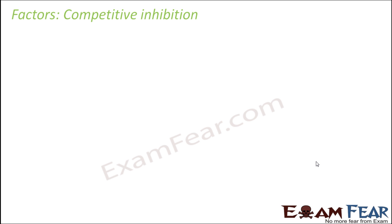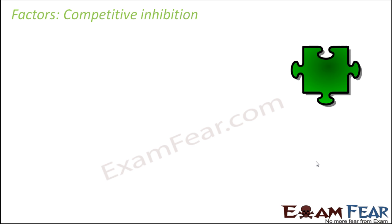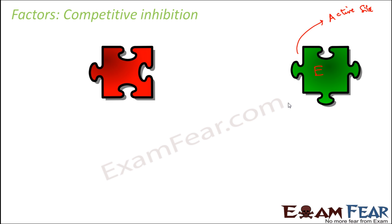The last factor is competitive inhibition. First, let us understand what inhibition is. Suppose this is your enzyme and this is the active site. The active site is meant for a substrate which can fit into it — not just any substance can fit. But what if there is some other substance with a shape very similar to the substrate? It is possible that substances exist which have a similar shape to the substrate.